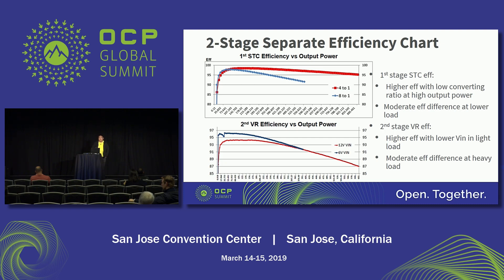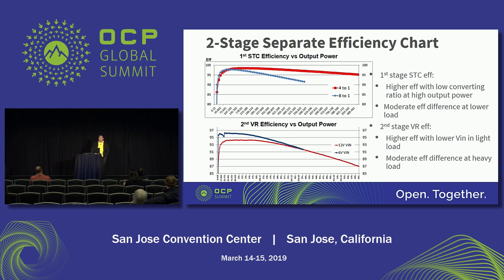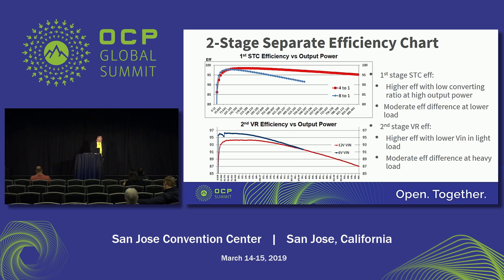Looking at the second stage — the VR multi-phase efficiency — at light load, the blue one is 6V input, which is the 8-to-1 first stage output and the second stage input. At light load, 12-volt and 6-volt V-in have different efficiency, because with 6-volt input voltage we have much less switching losses for the second stage. So we can have better efficiency if we tune the voltage to 6-volt at light load. But when load increases at the second stage, efficiency drops, and at heavy load, conduction losses take the most part, so 6-volt V-in no longer has an efficiency advantage.